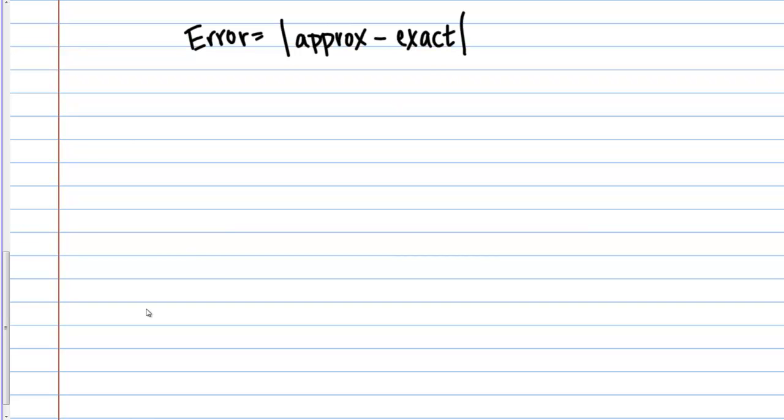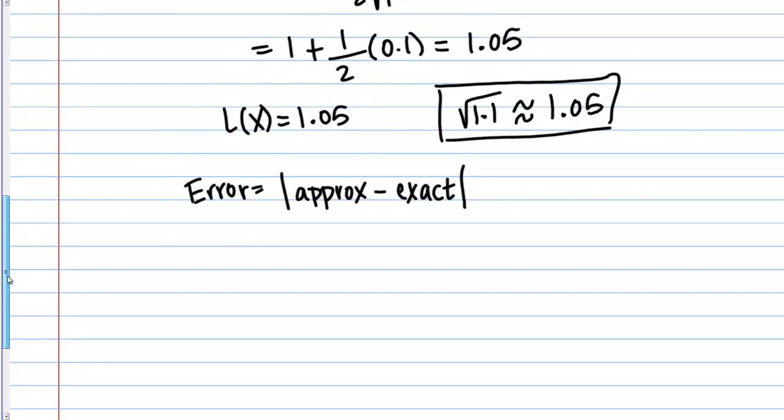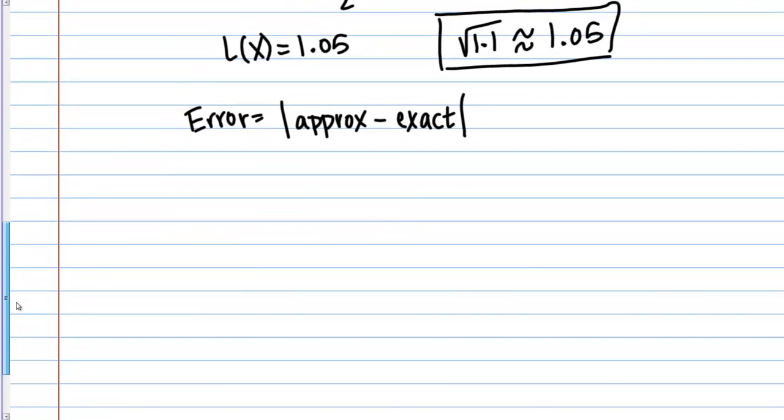Sometimes when we do an approximation, a linear approximation or some other type of approximation, we want to know how accurate that approximation is. We might want to calculate the error of the approximation. This is the expression for error. The error is simply the absolute value of the approximate value minus the exact value. Let's actually build off our previous example that we did, where we approximated the square root of 1.1. Let's find the error of that approximation.